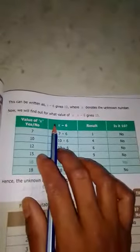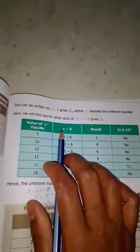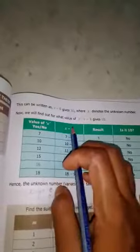Using the table, you can apply different x values. If x is 6, then 6 minus 6 equals 1, but that's not possible because we need 10. If x is 7, then 7 minus 6 equals 1. Next, try 16. When x equals 16, 16 minus 6 equals 10. So x value is 16. On the tray, there were 16 eggs initially.